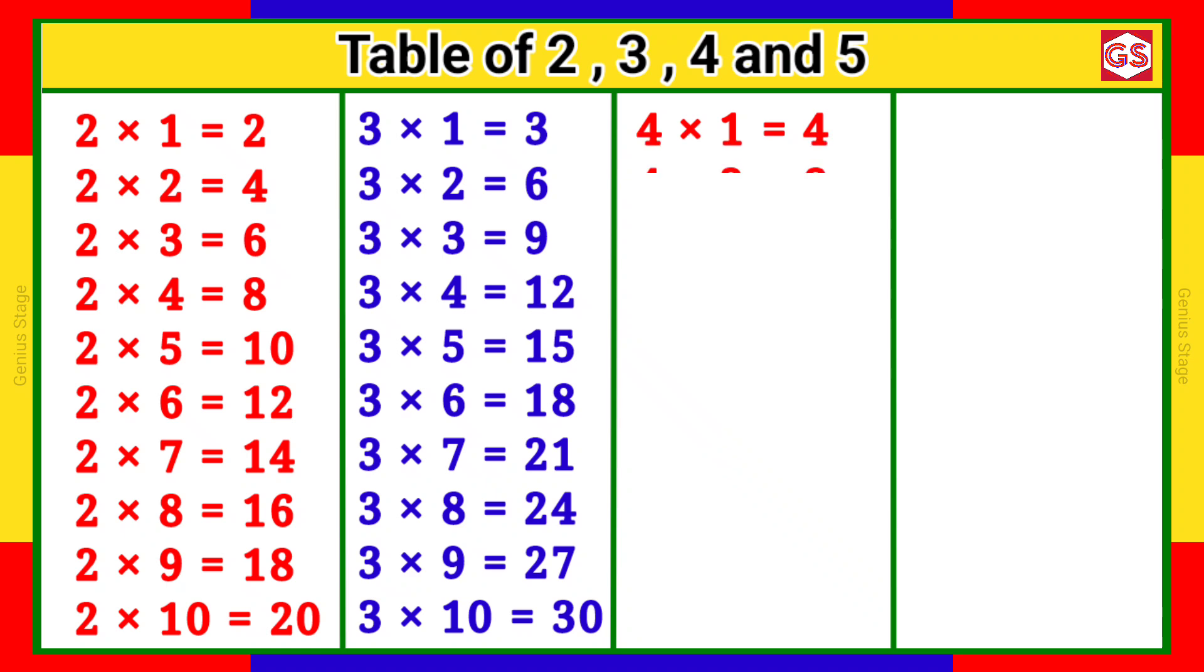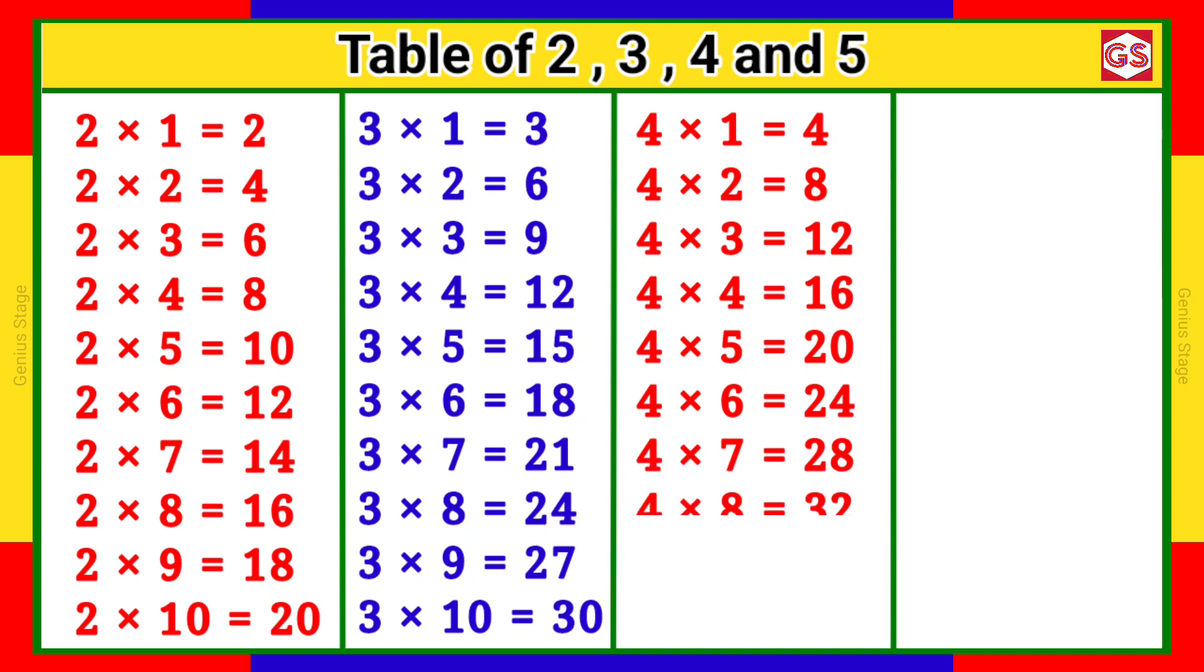4 1s are 4, 4 2s are 8, 4 3s are 12, 4 4s are 16, 4 5s are 20, 4 6s are 24, 4 7s are 28, 4 8s are 32, 4 9s are 36, 4 10s are 40.